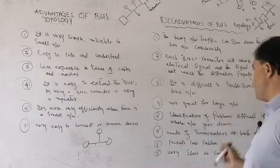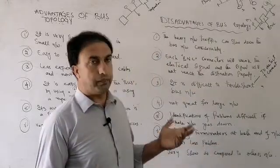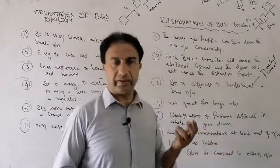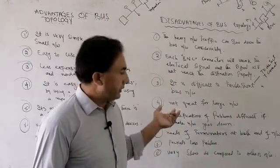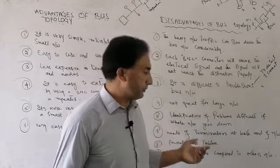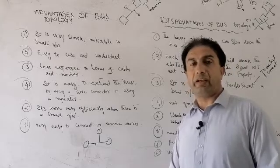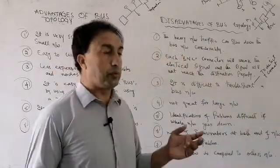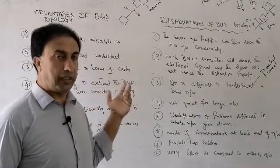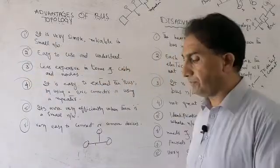The fourth disadvantage is that this topology is not great for large networks. If we have a large network, this topology may not be used — it is not suitable or the best topology in that case. The fifth disadvantage is that if the whole network goes down, problem identification becomes very difficult to determine which node is causing the failure.